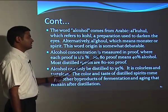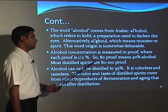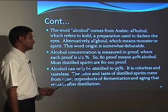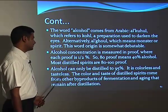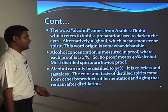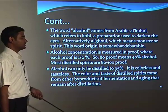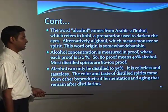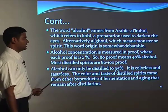Alcohol concentration is measured in proof, where each degree of proof equals one-half percentage of alcohol — so 80 proof means 40 percent alcohol. Most distilled spirits are 80 to 100 proof. Alcohol can only be distilled to 95 percent; it is colorless and tasteless at that point. The color and taste of distilled spirits come from other byproducts of fermentation and aging that remain after distillation.